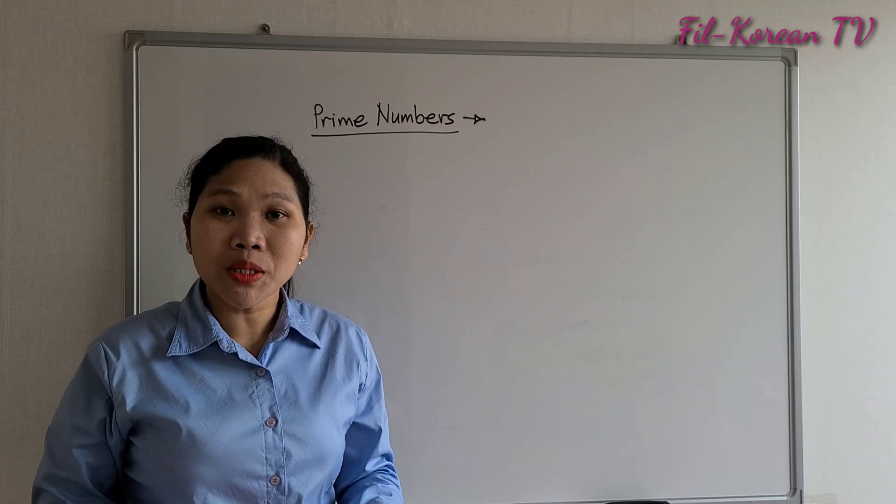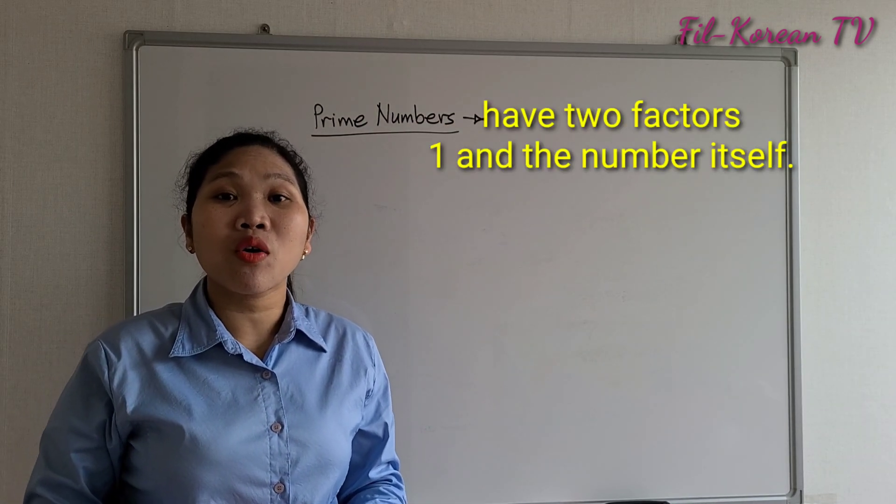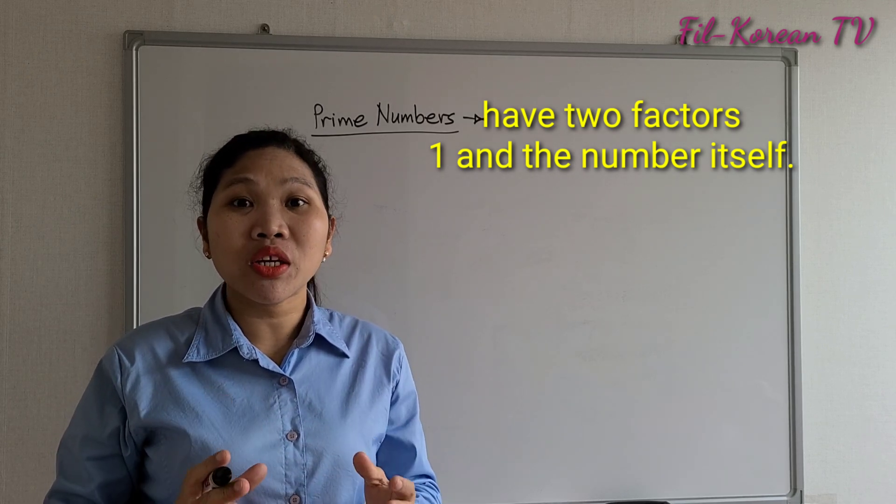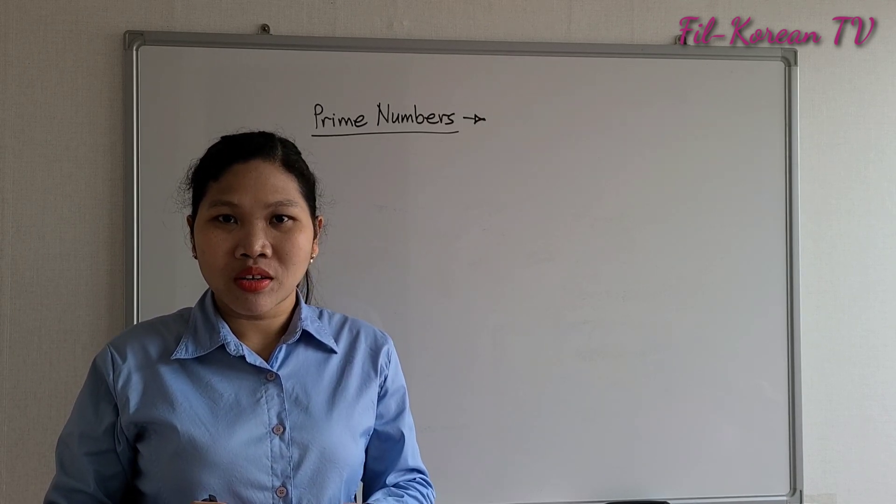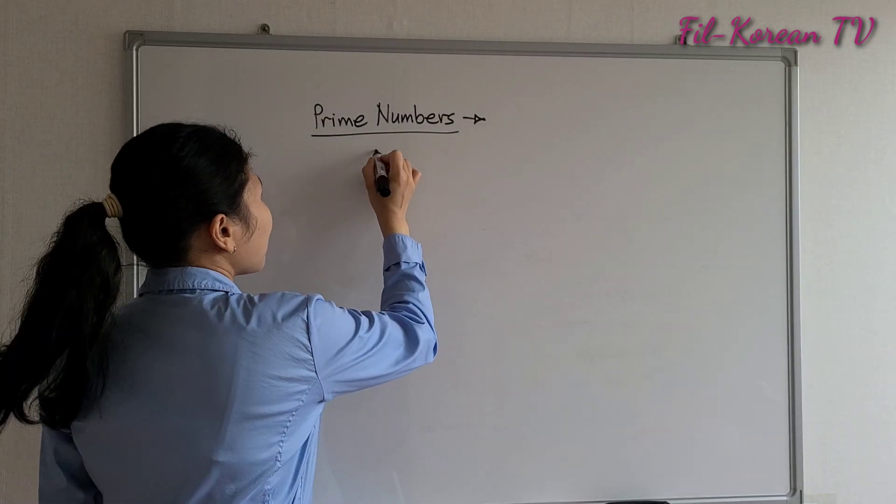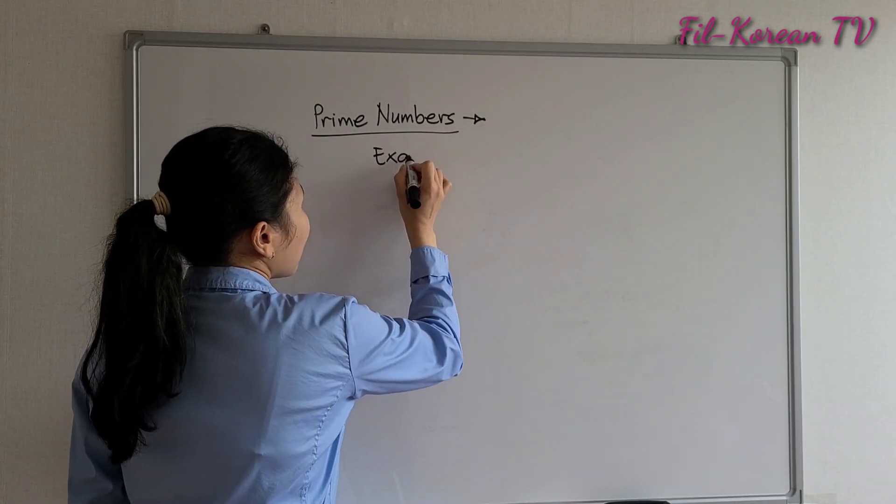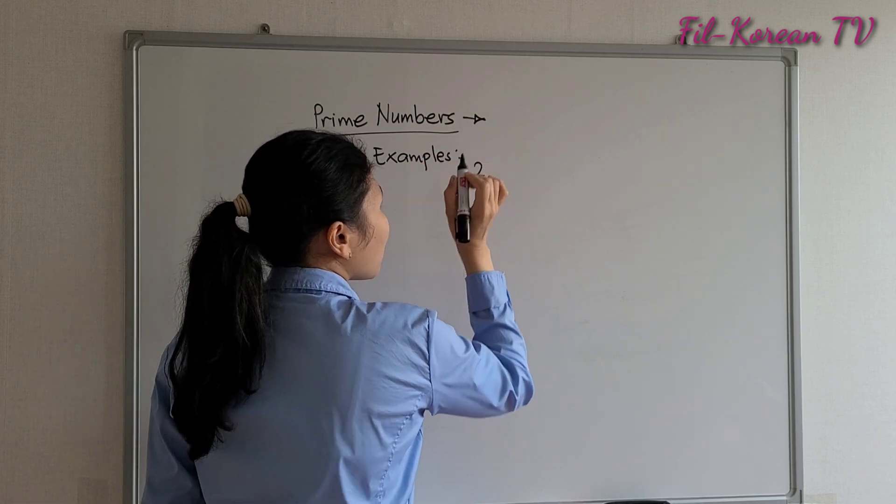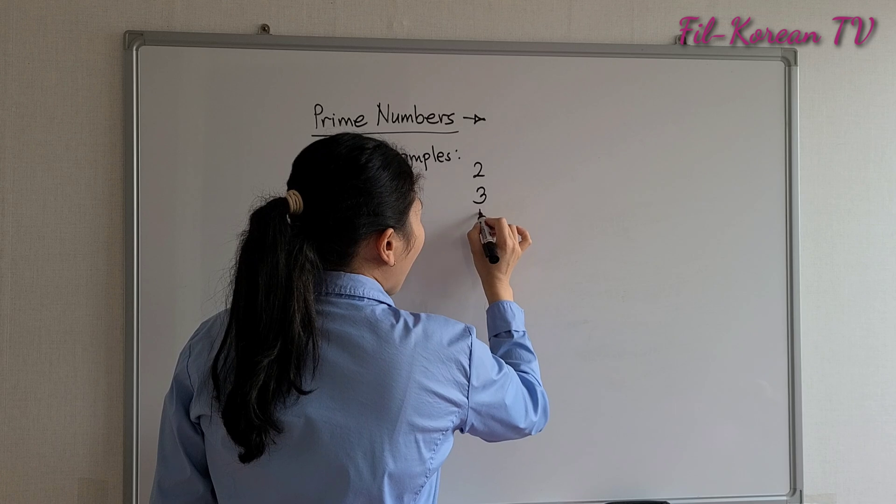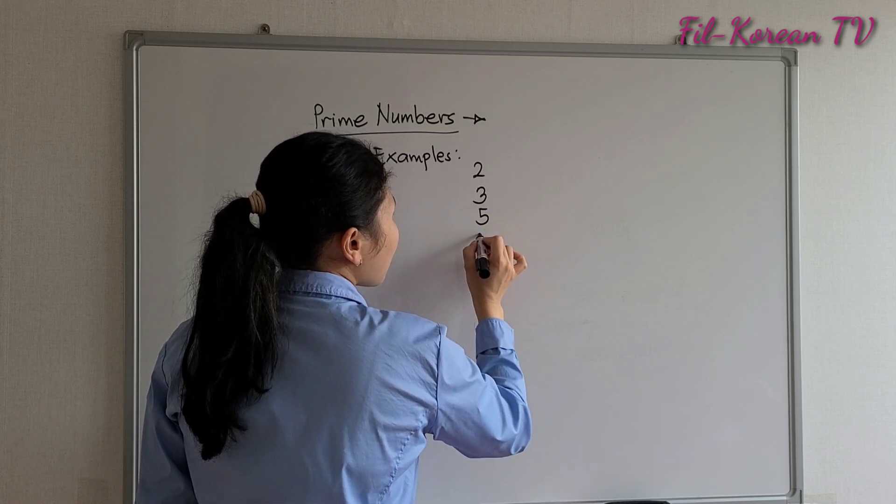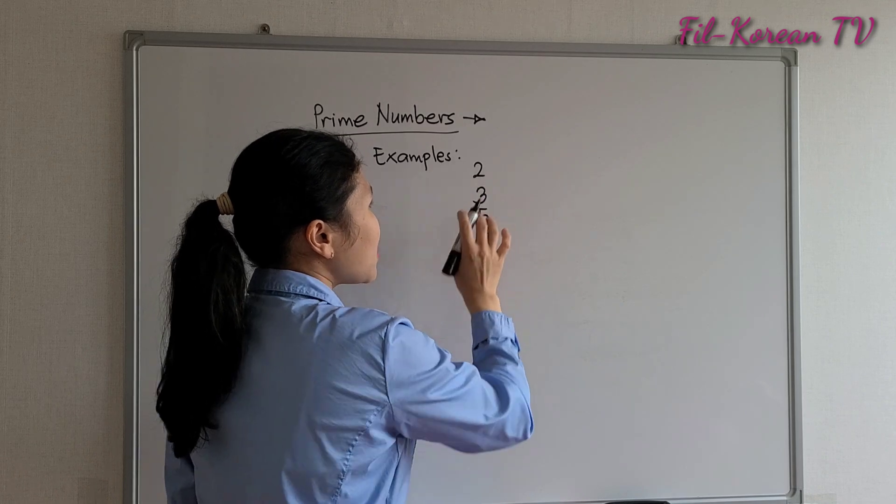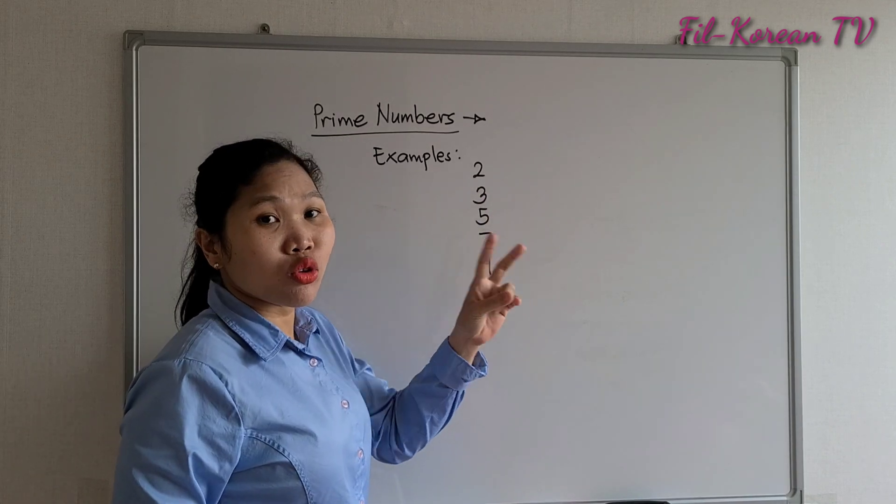When we see prime numbers, these are numbers with only two factors: one and the number itself. Examples: two, three, five, seven, eleven. These numbers have only two factors.